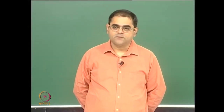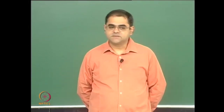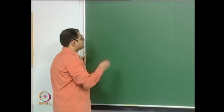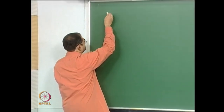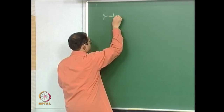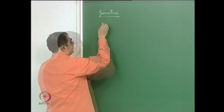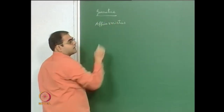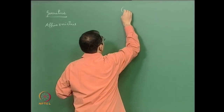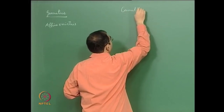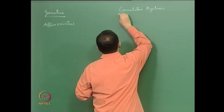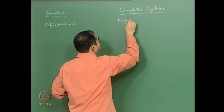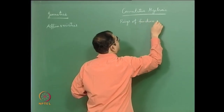Let us continue our discussion about rings of functions of varieties. Let me recall the picture as it was explained in the previous lecture. On one side we have the geometric side — affine varieties — and on the commutative algebraic side we have the so-called rings of functions on affine varieties.